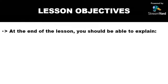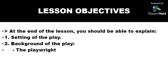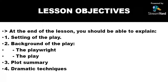Let's begin with the lesson objectives. At the end of the lesson, you should be able to explain the following: one, the setting of the play; two, the background of the play, which includes the background of the playwright and the background of the play itself; three, the plot summary; and four, the dramatic techniques. These are the various items on our agenda for this lesson. So let's begin to take them one by one.